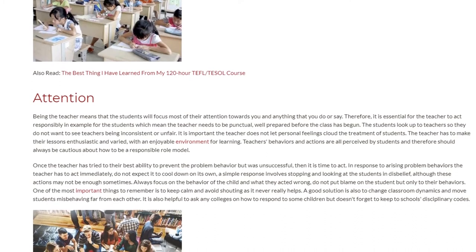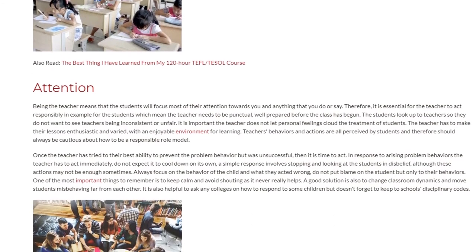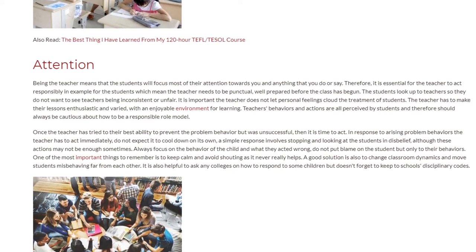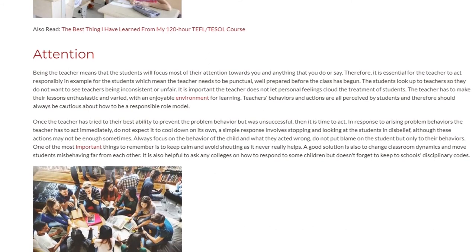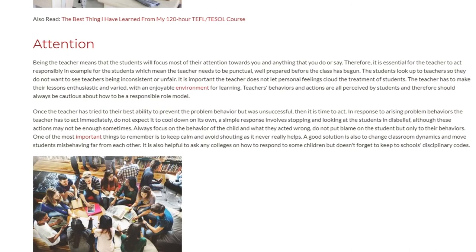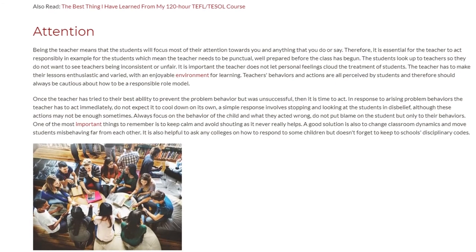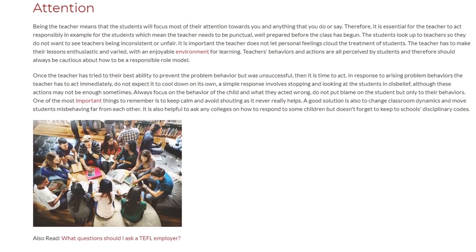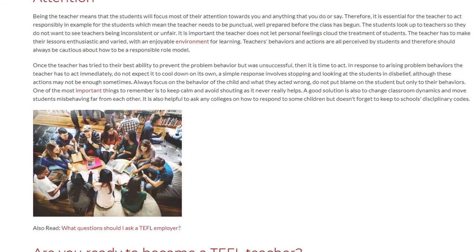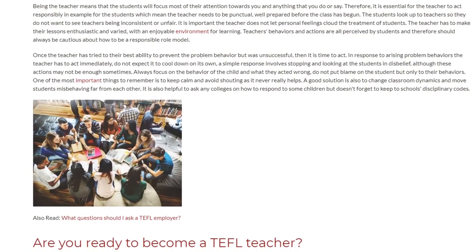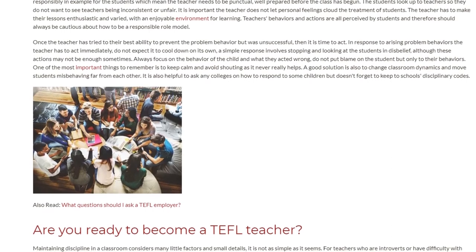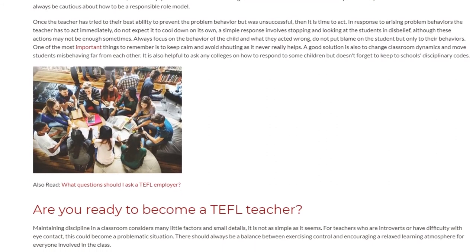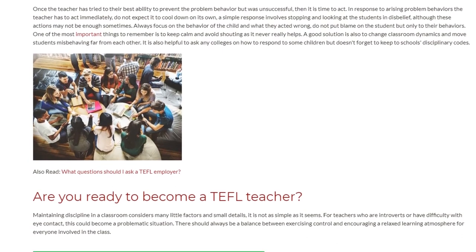Teachers' behaviors and actions are all perceived by students, and therefore they should always be cautious about how to be a responsible role model. Once the teacher has tried their best to prevent problem behavior but was unsuccessful, it is time to act. In response to arising problem behaviors, the teacher has to act immediately and not expect it to cool down on its own. A simple response involves stopping and looking at the student in disbelief, although these actions may not always be enough. Always focus on the behavior of the child and what they did wrong — do not put blame on the student, only on their behavior. Keep calm and avoid shouting, as it never really helps. A good solution is also to change classroom dynamics and move misbehaving students away from each other. It is also helpful to ask colleagues how to respond to some children, but do not forget to keep to the school's disciplinary codes.